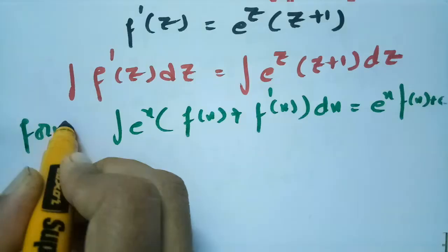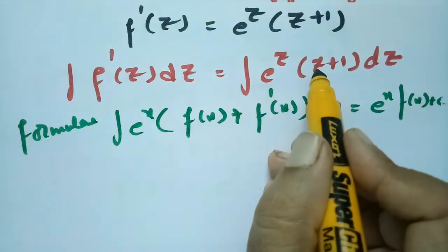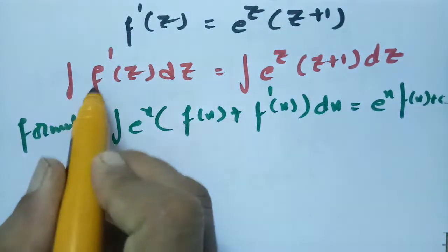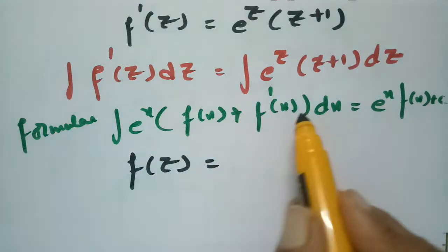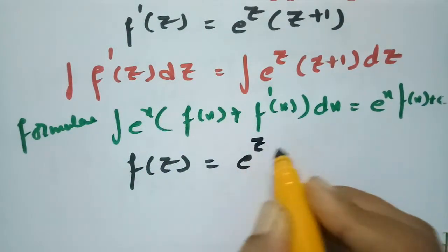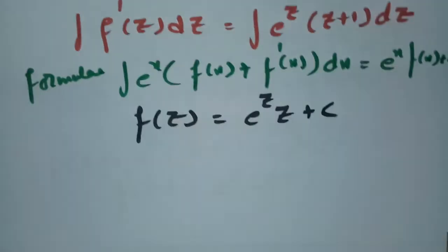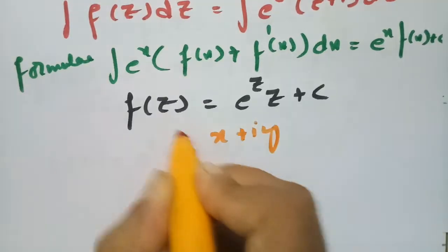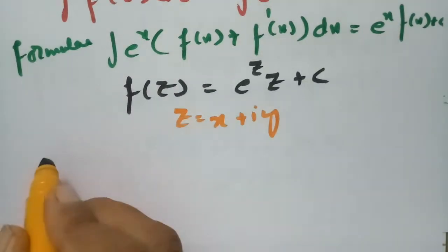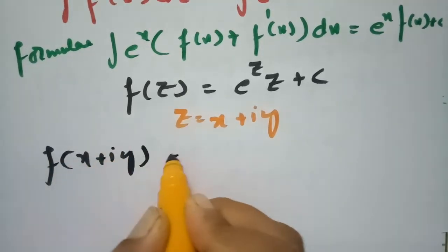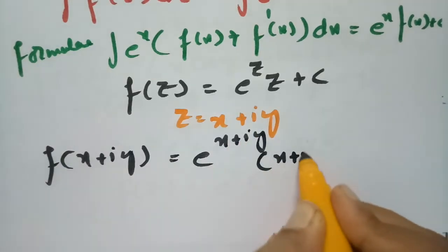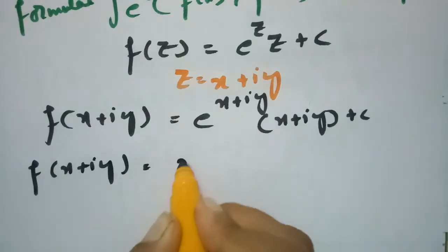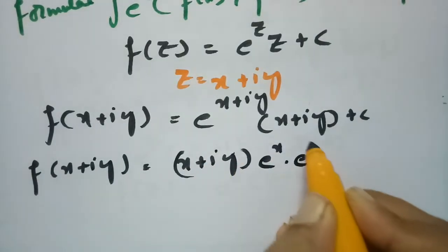Using this formula, f(z) = e^z·z + c. Since z = x + iy, we write f(x + iy) = e^(x+iy)·(x + iy) + c. This can be written as (x + iy)·e^x·e^(iy) + c, and since e^(iy) = cos y + i sin y, we substitute.